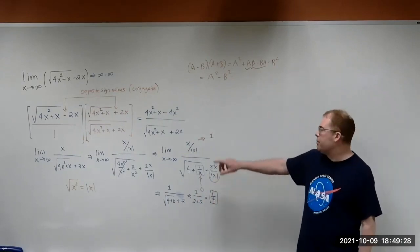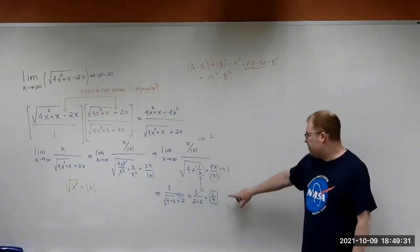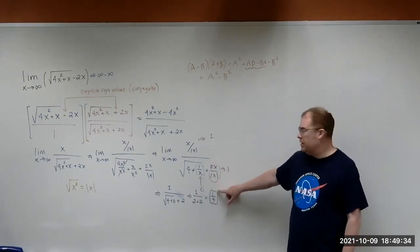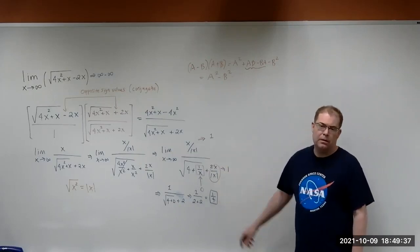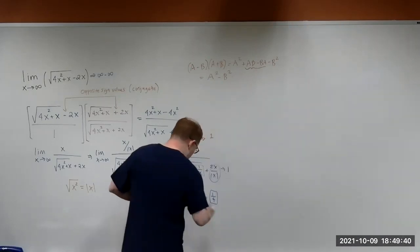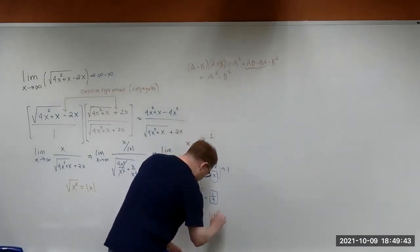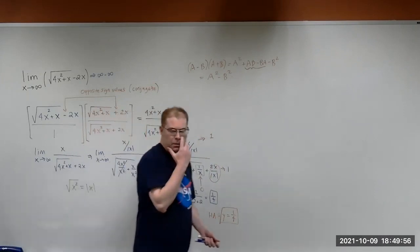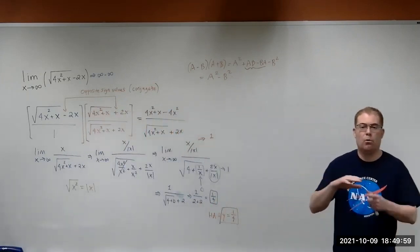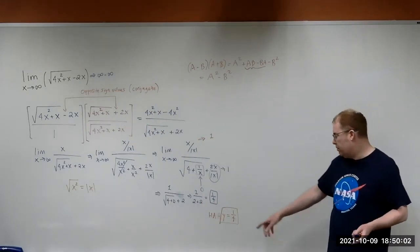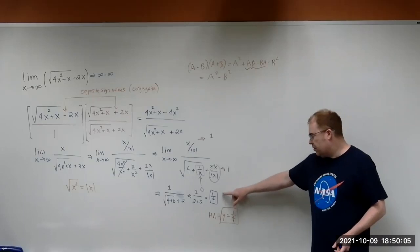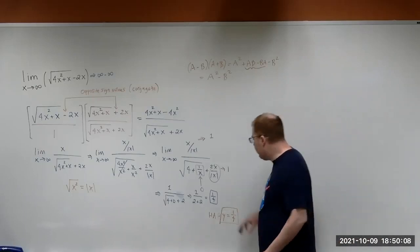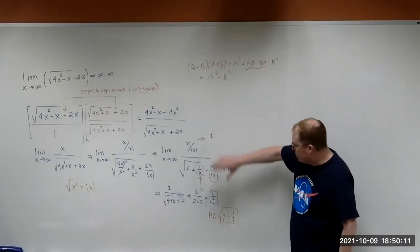Remember what this means geometrically: if you were to plot this function, this tells you that the function has a horizontal asymptote, written as y equals 1 over 4. Horizontal asymptotes are basically horizontal lines with a slope of 0, so it's always y equals whatever constant you got. This is the answer for this problem.